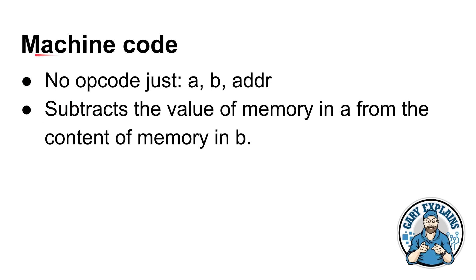You can turn those principles into machine code instructions. There's no opcode, so in the machine code you just specify A, B, and the address. There's just three things you specify: where you're doing the subtraction, what you're subtracting from it, and the address to jump to if it's less than zero. This subtracts the value of memory in A from the contents of the memory in B, and it will store the result in B. So B becomes B equals B minus whatever is specified in A. If it's less than zero after the subtraction, it will jump to the address, which could be the next instruction or somewhere else in memory.